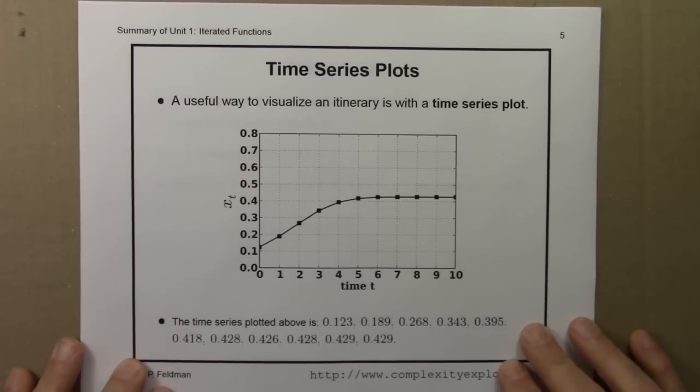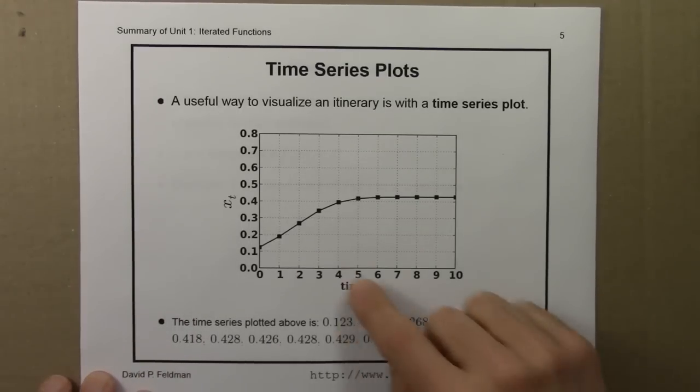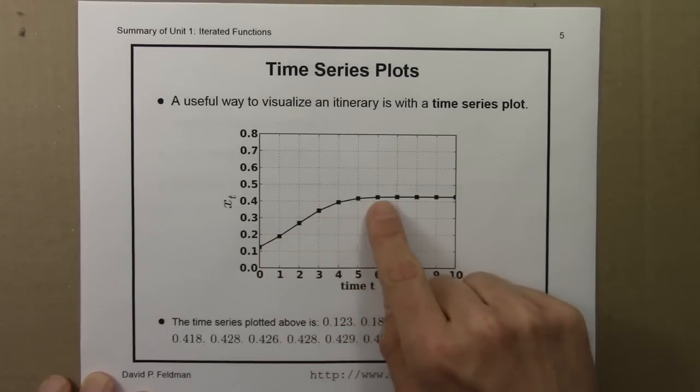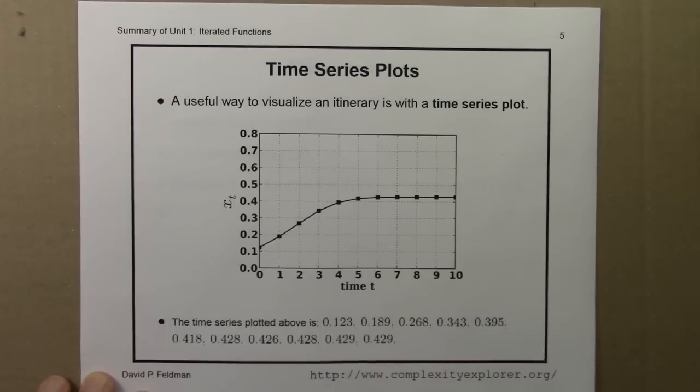A useful way to visualize an itinerary is with a time series plot. So here is a time series. I plotted this itinerary. We can see that the function increases and then approaches what appears to be a fixed point around 4.3.